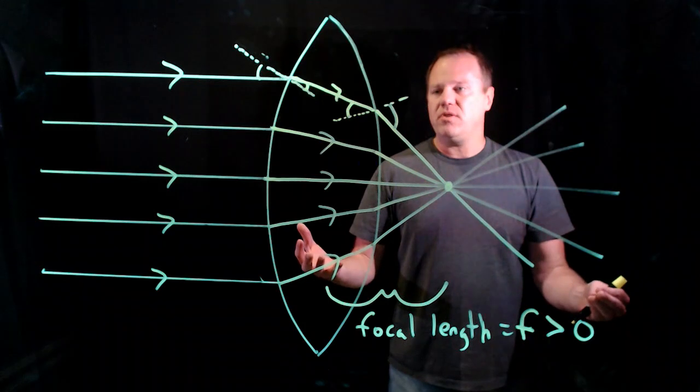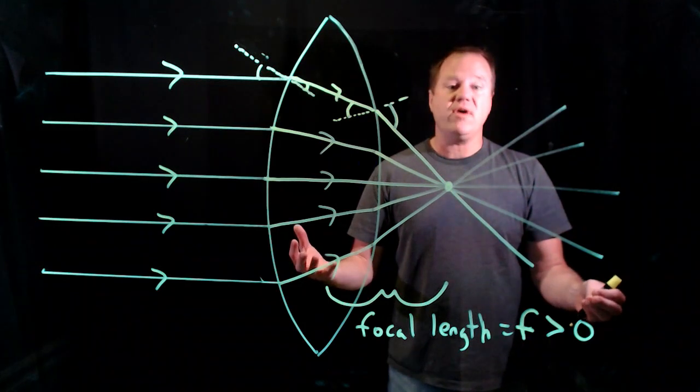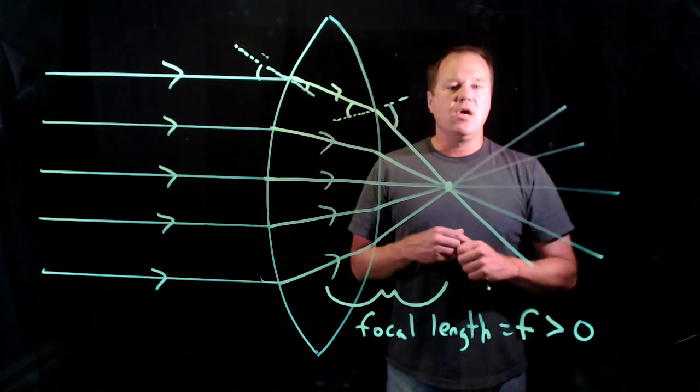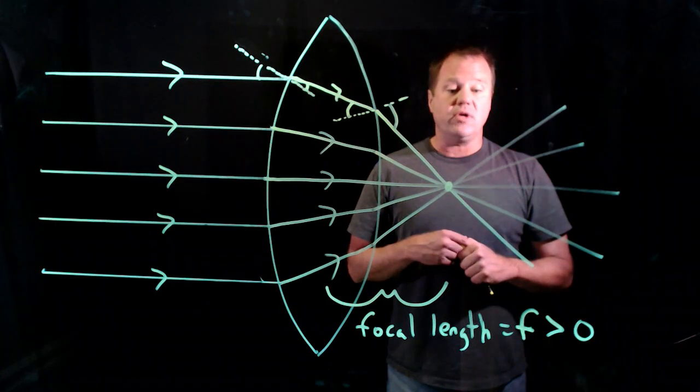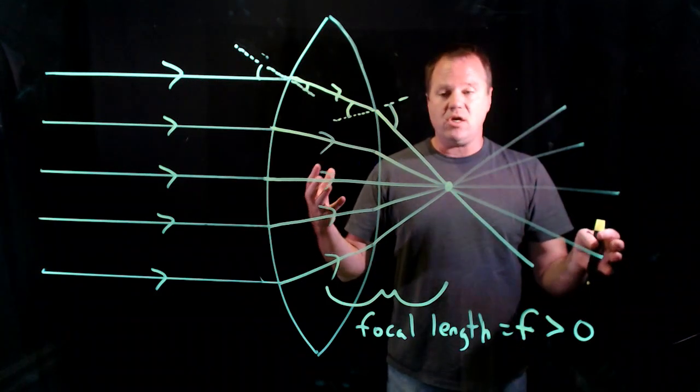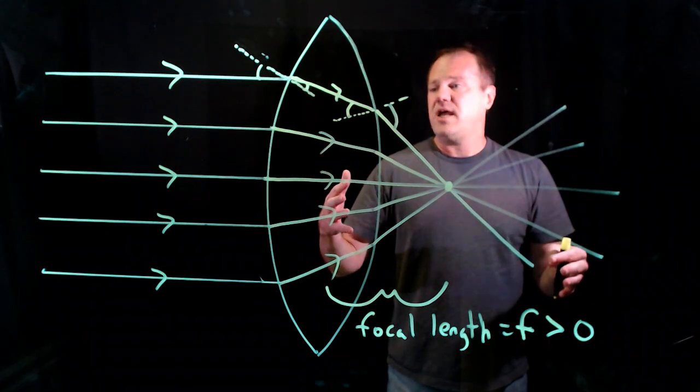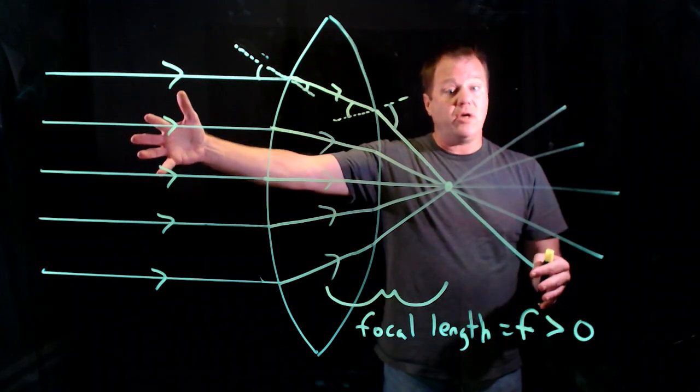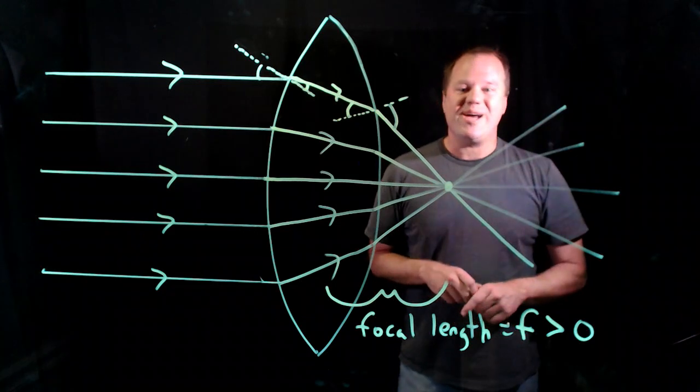So that's how you deal with a biconvex lens conceptually and how to think about its focal length. So what we'll do later is we'll show how to use a biconvex lens when the rays aren't coming in parallel. And we'll see what happens with that. Thanks for watching.